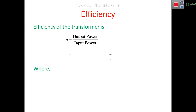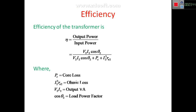Coming to efficiency, it is defined as output power divided by input power, which equals V2 I2 cos θ2 divided by V2 I2 cos θ2 plus EC plus I2 squared R2. The output power is the kVA rating of the transformer multiplied by power factor, and input power is output power plus losses — where EC is the core loss and I2 squared R2 is the ohmic loss.